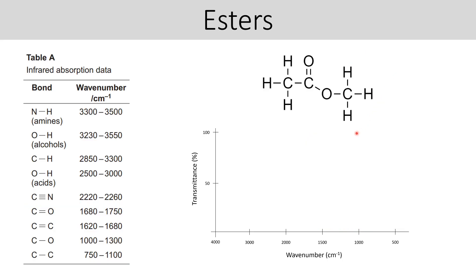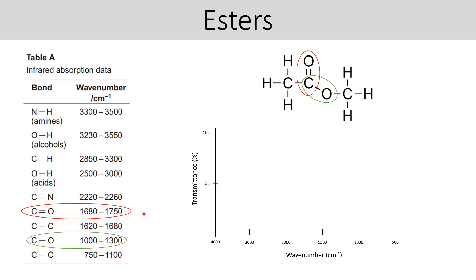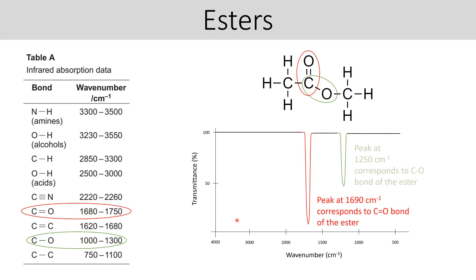Let's have a look at an ester. The defining covalent bonds of an ester are the C–O, which we'd expect in this range, and the C=O, which we'd expect in this range. That's what our infrared spectrum would look like, and that's how we'd word it.